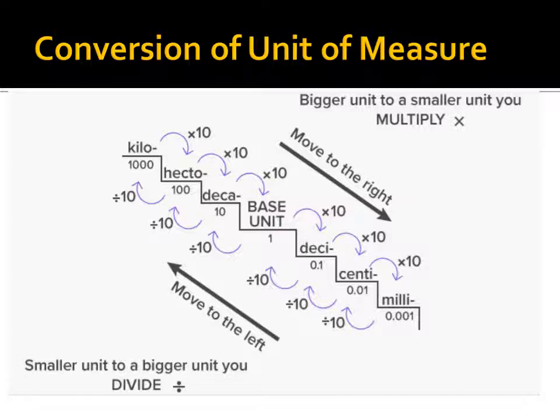Always remember this rule for converting metric units: if you are going to move to the right, simply multiply by 10 — that is, converting a bigger unit to a smaller unit means you multiply by 10. If you are converting a smaller unit to a bigger unit, you divide by 10, moving to the left. Moving left or moving right is the simplest way of converting within the metric system.